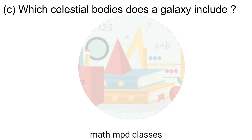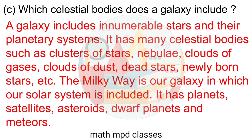C. Which celestial bodies does a galaxy include? Answer: A galaxy includes innumerable stars and their planetary systems. It has many celestial bodies such as clusters of stars, nebulae, clouds of gases, clouds of dust, dead stars, newly born stars, etc. The Milky Way is our galaxy, in which our solar system is included. It has planets, satellites, asteroids, dark planets, and metals.